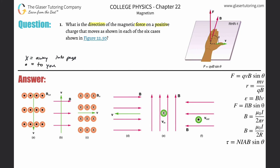If it feels like it really hurts your wrist, you're probably doing it right for case A. Your thumb is pointing down, your fingers are pointing toward your face, and your palm should now be facing to the left. Since we're dealing with a positive charge using right hand rule number one, the force always points out of your palm — so the direction of the force here is to the left. That takes care of letter A.